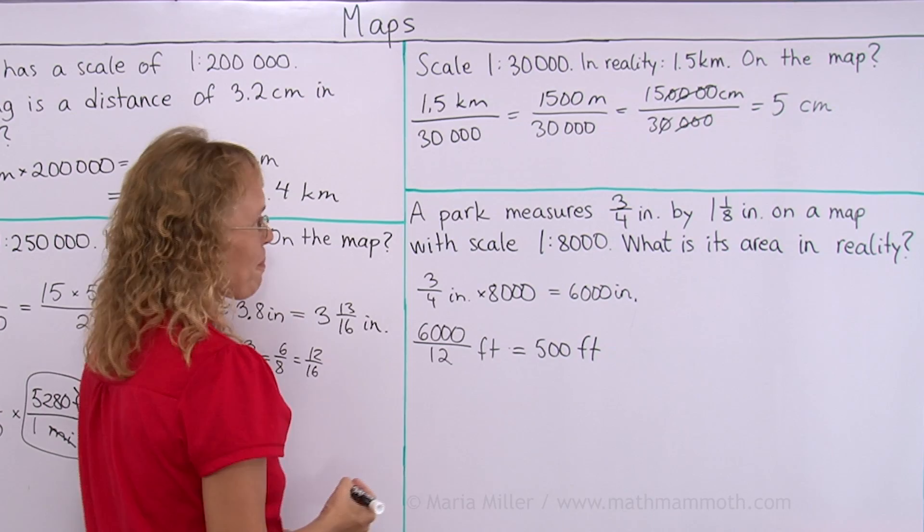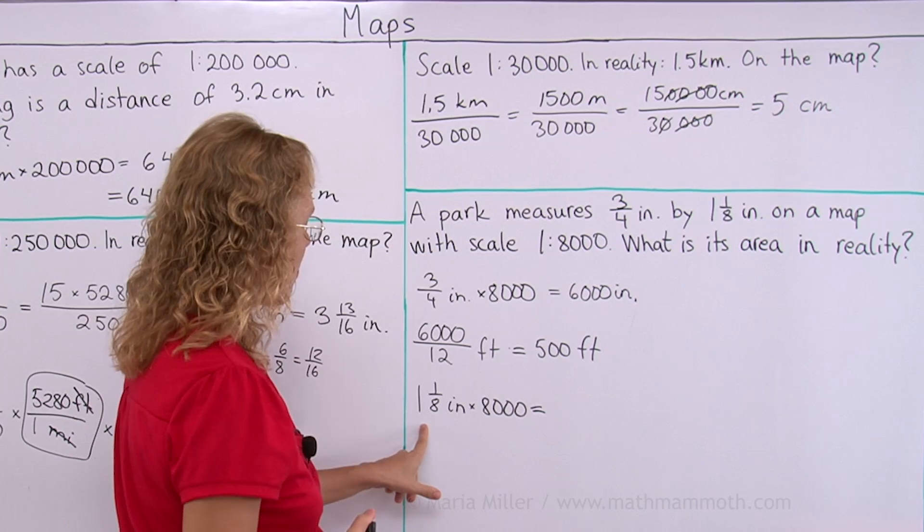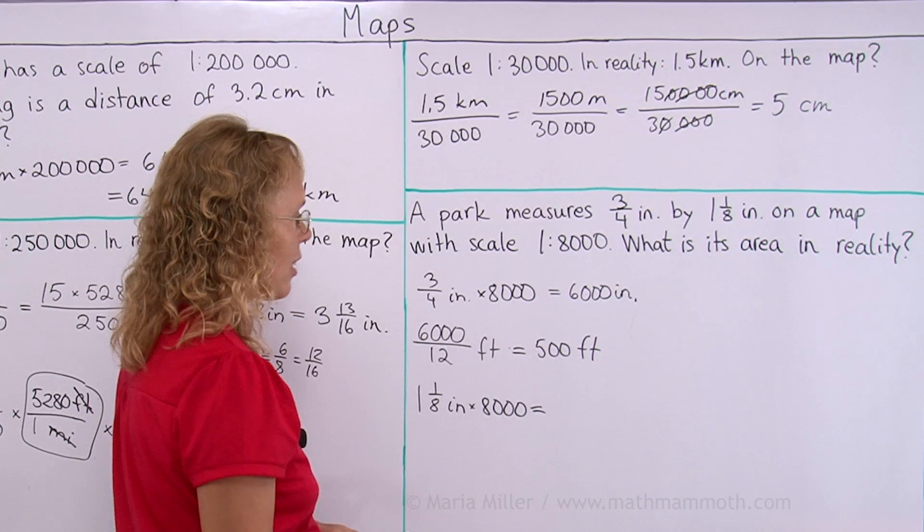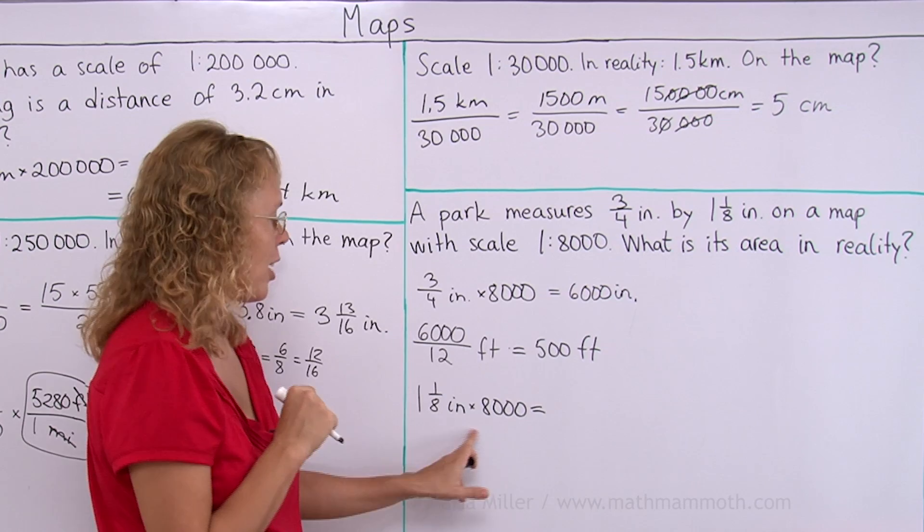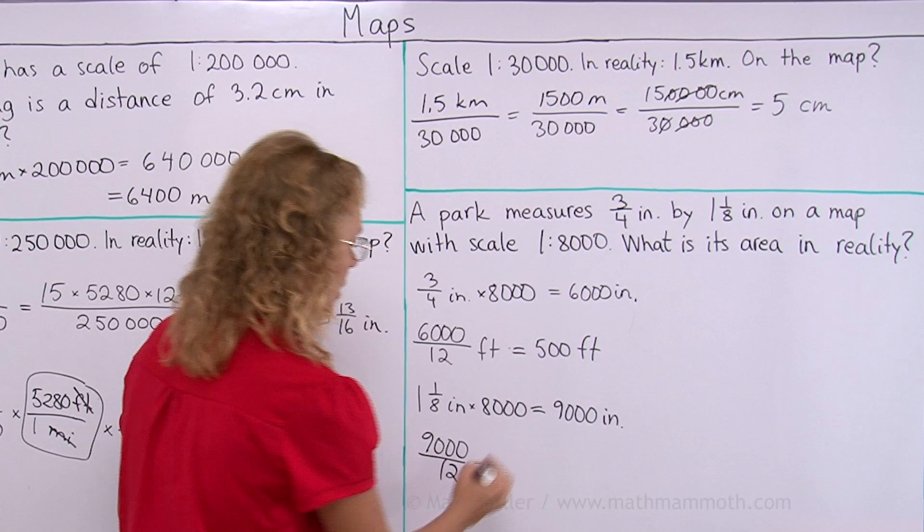And then the other dimension. 1 and 1 eighth of an inch. Here I would have 9 eighths of an inch. 9 eighths. And so I get 9 times 8,000 divided by 8. So that is exactly 9,000. Or you can use a decimal. 1.125 times 8,000. So we will get 9,000 inches. And then we need to do the same as first finding it in feet. Divide that by 12. And that is 750 feet.